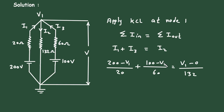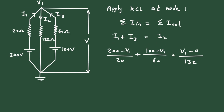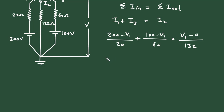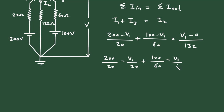Now let's solve this to get the value of V1. Expanding: (200/20) − (V1/20) + (100/60) − (V1/60) − (V1/132) = 0.